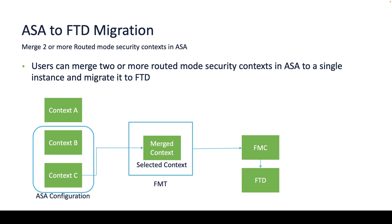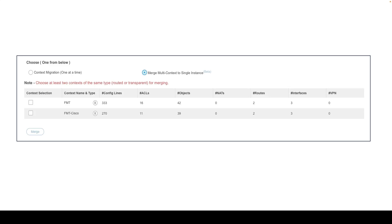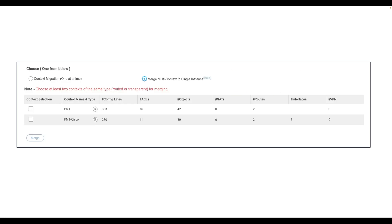The new version has also changed in that it no longer asks for a primary context when the option selected is Merge Context, but instead provides the user with a list of contexts to select for merging and migration. The user can select two or more routed or transparent firewall mode contexts to merge and perform the migration, but the selected contexts must be of the same type, either routed or transparent.